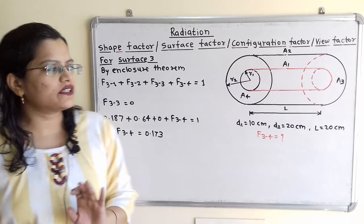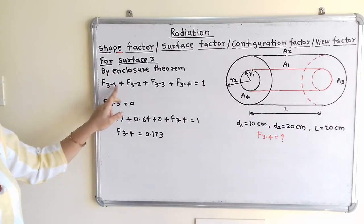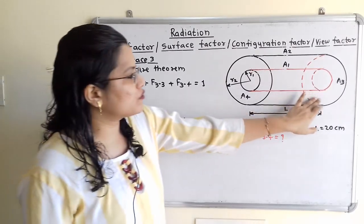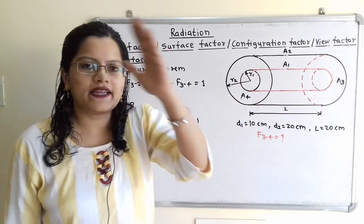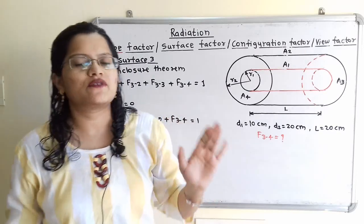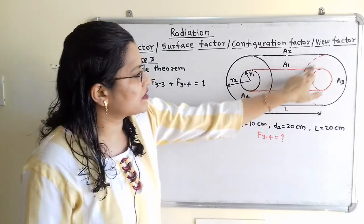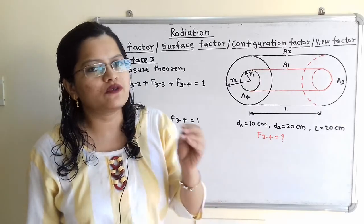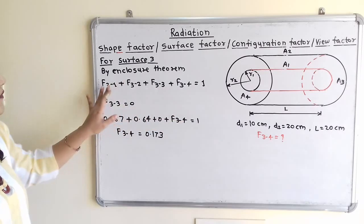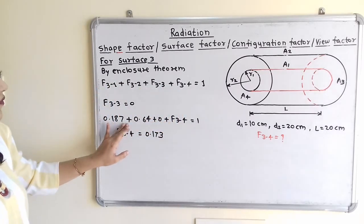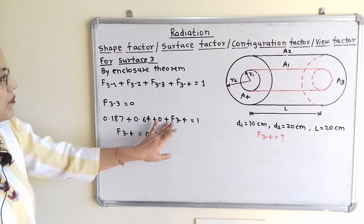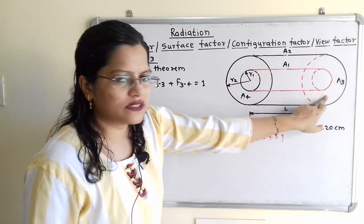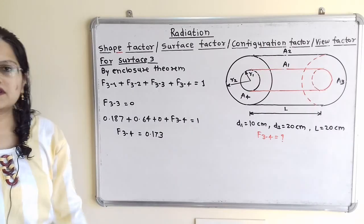Applying the enclosure theorem for surface 3: F(3→1) + F(3→2) + F(3→3) + F(3→4) = 1. Since surface A3 is a plain solid section, F(3→3) = 0. Substituting: 0.187 + 0.64 + 0 + F(3→4) = 1. Solving, we get the required answer: F(3→4) = 0.173.